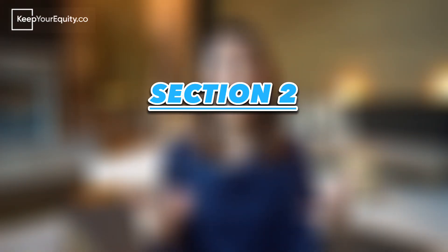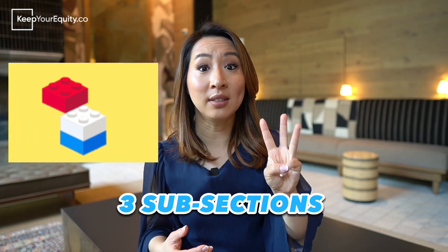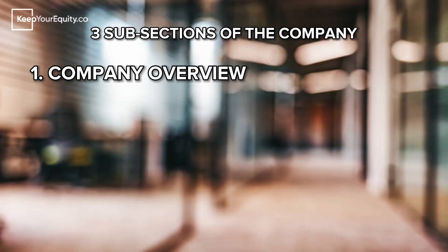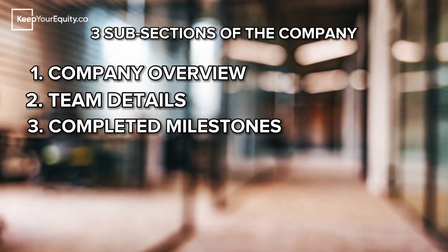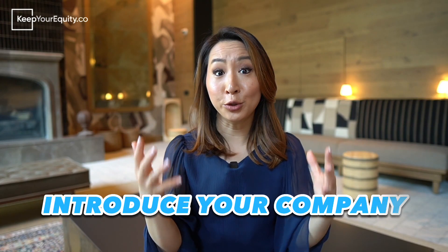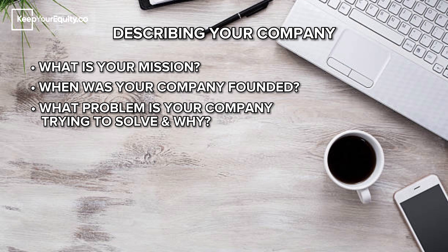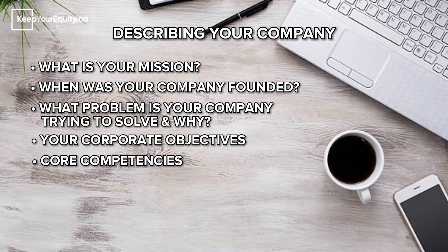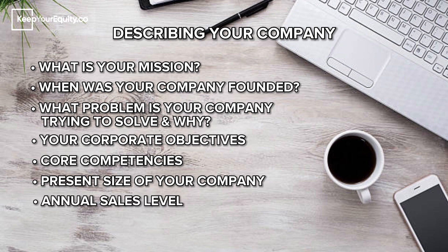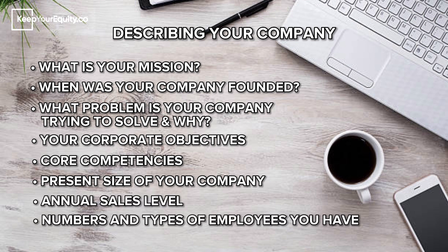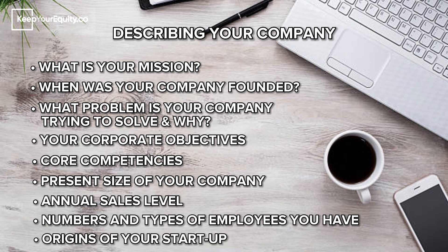The next section is the company. I like to break this into three subsections: company overview, team details, and completed milestones. First, introduce your company — answer questions like what is your mission, when was your company founded, and what problem is your company trying to solve. You can also include corporate objectives, core competencies, the present size of your company, your annual sales level, number and types of employees, and a short description of the origins of your startup.